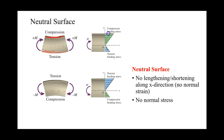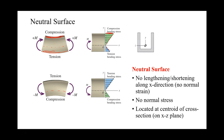On the top we have a compressive stress, maximum at the top surface, and then it decreases and increases in tension as it reaches the bottom. The neutral surface has no lengthening or shortening and is located at the centroid, along the x-z plane. The centroid of our cross section defines our x-y-z axis.